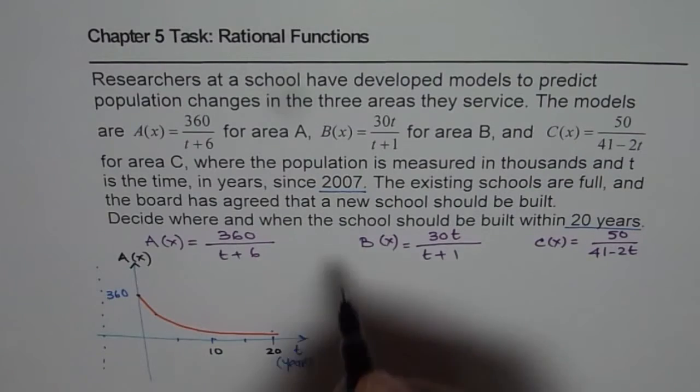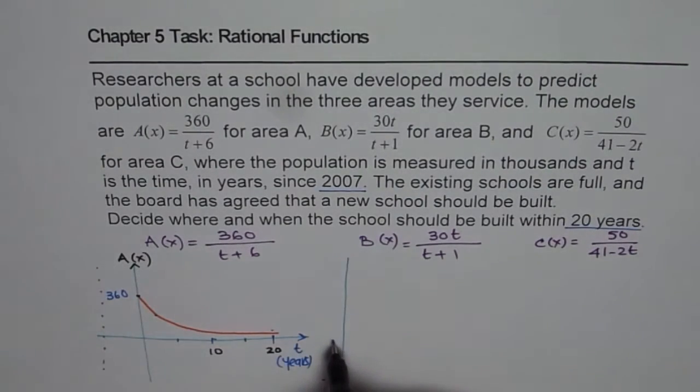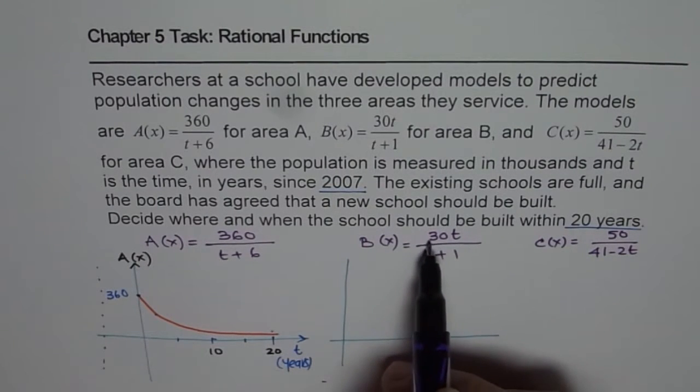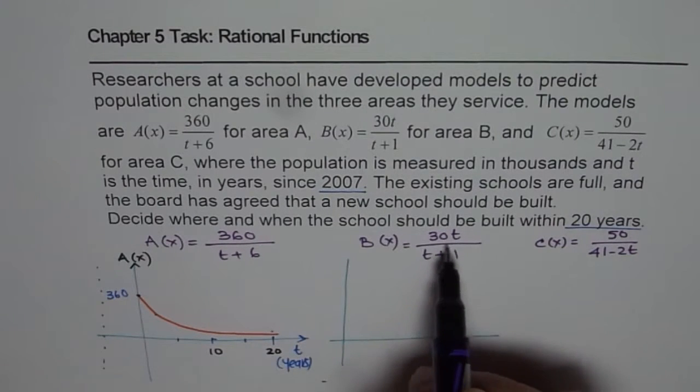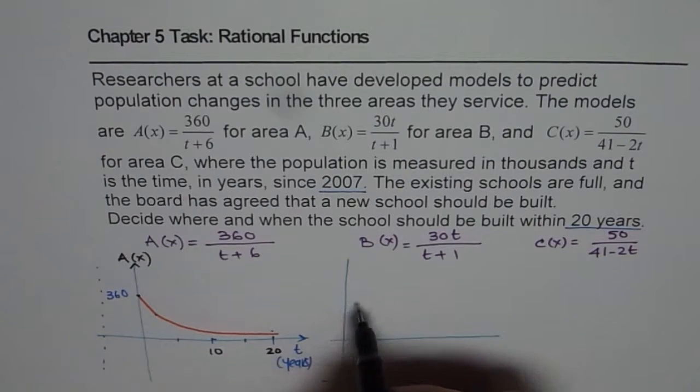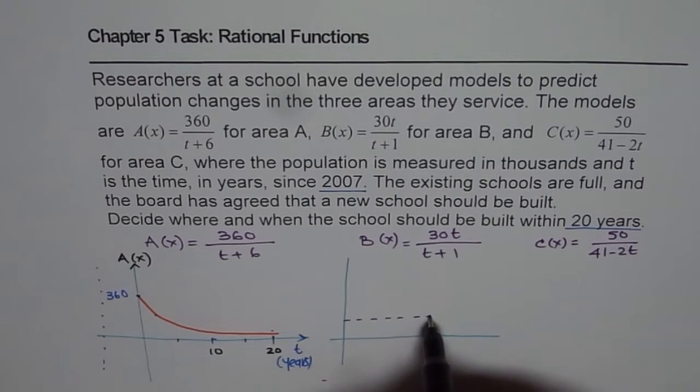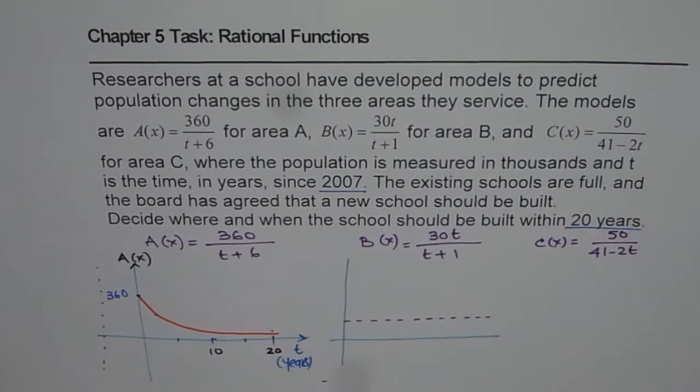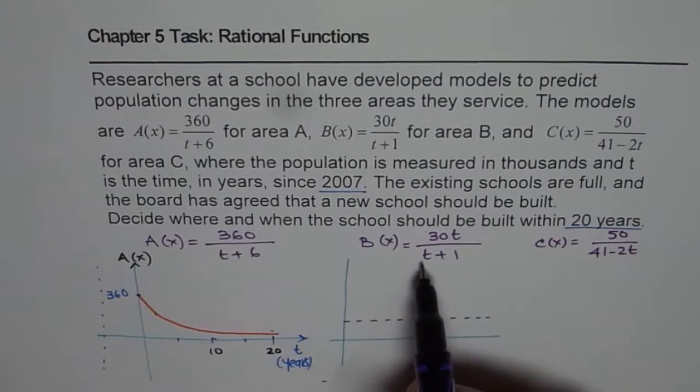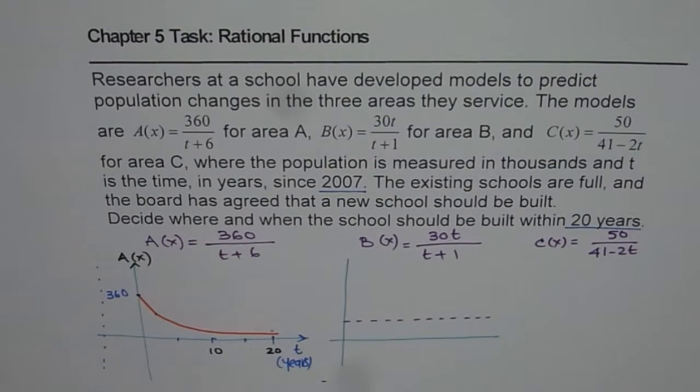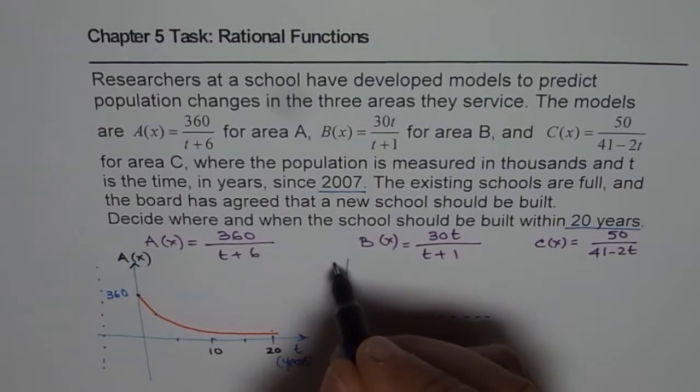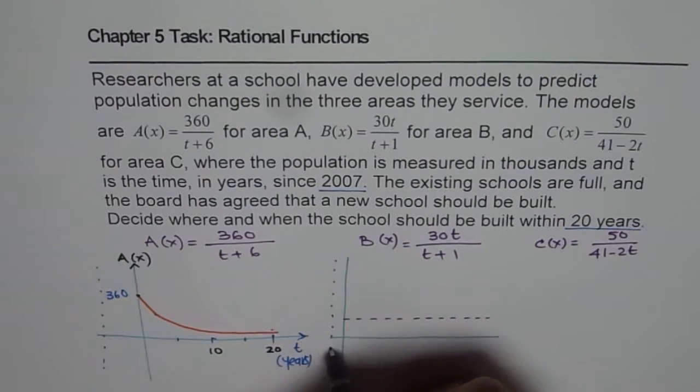Let's see what happens for area B. Now in this area, the function is 30t over t plus 1. So that gives us a horizontal asymptote at 30, so let us say this is 30 for us. There is a vertical asymptote at minus 1, so on this side, so we are not really bothered about it for the time being.